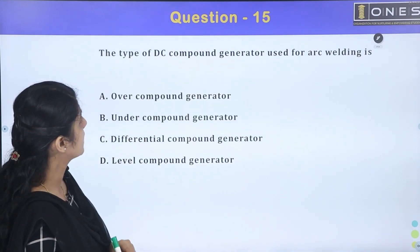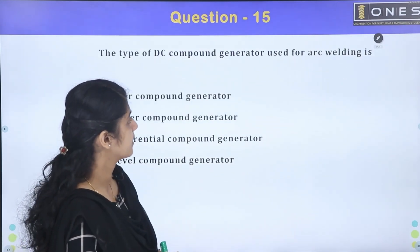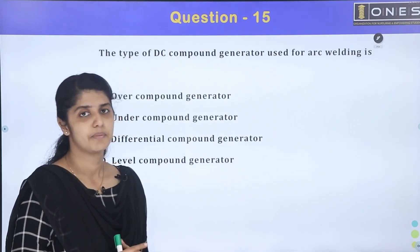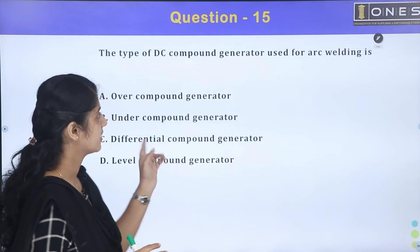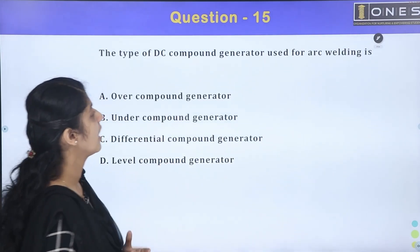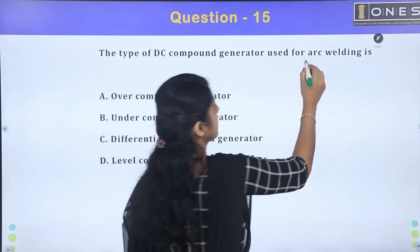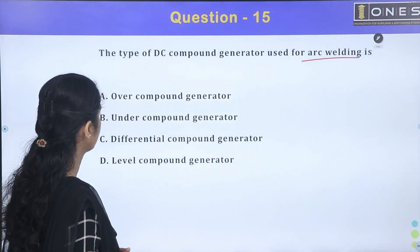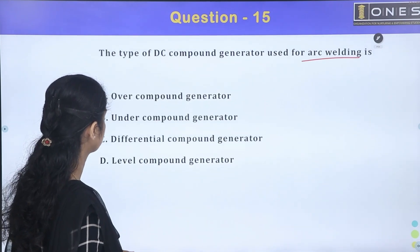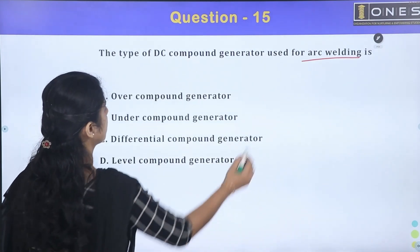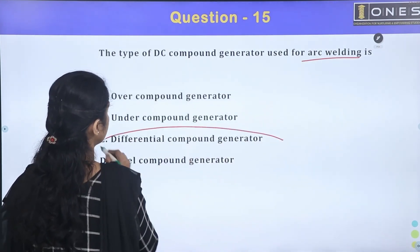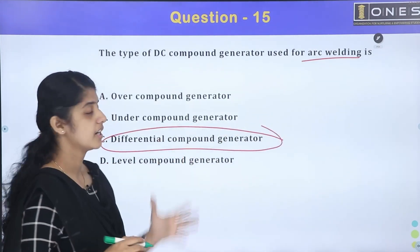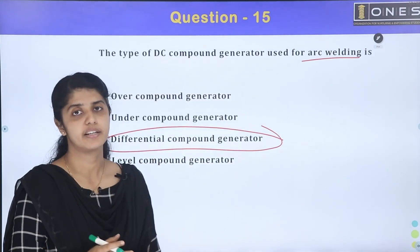Next question: The type of DC generator used for arc welding. For arc welding applications, the differential compound generator is used.